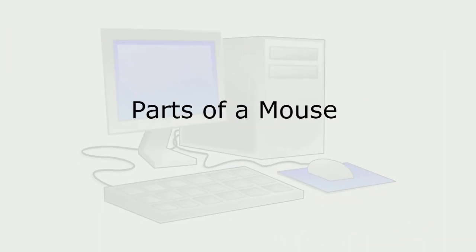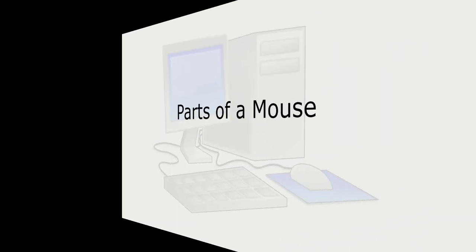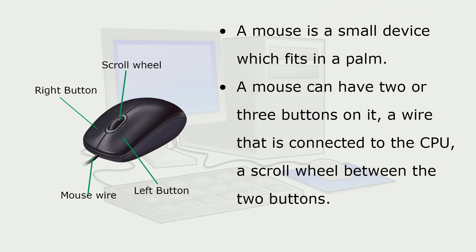Parts of a Mouse. A mouse is a small device which fits in a palm. A mouse can have two or three buttons on it, a wire that is connected to the CPU, and a scroll wheel between the two buttons.